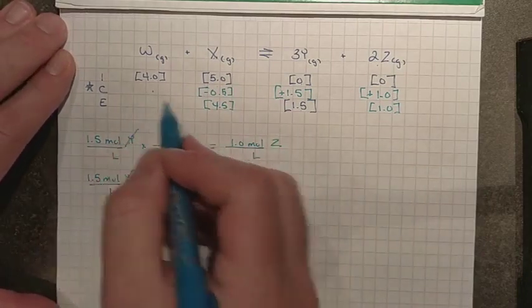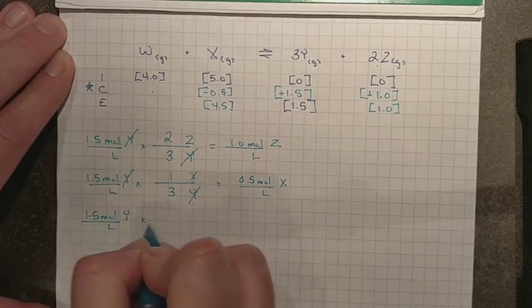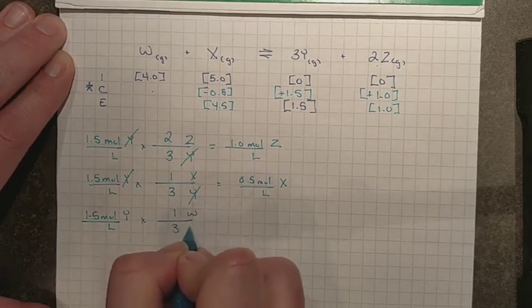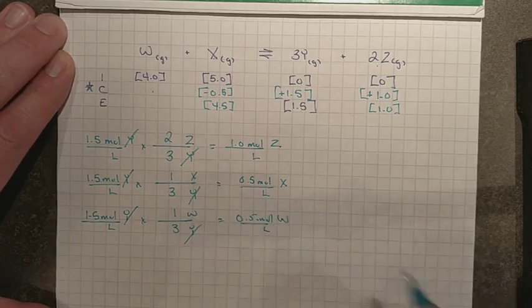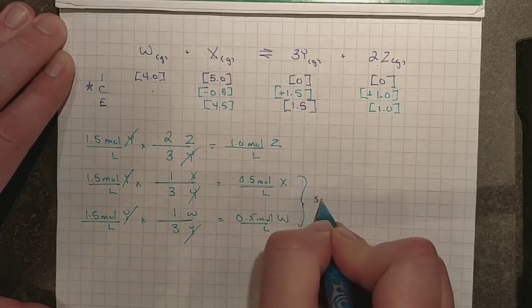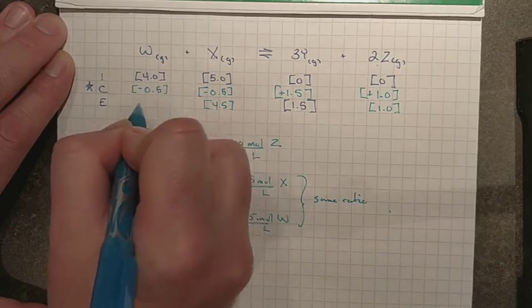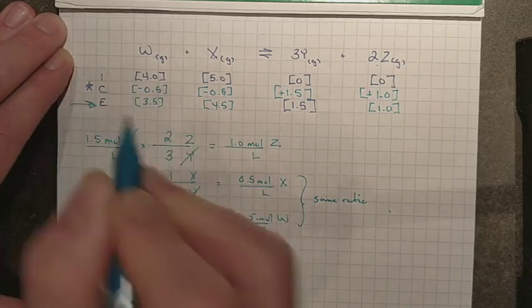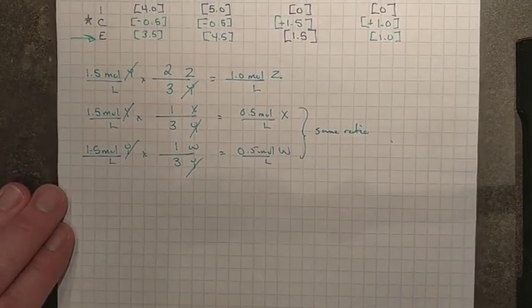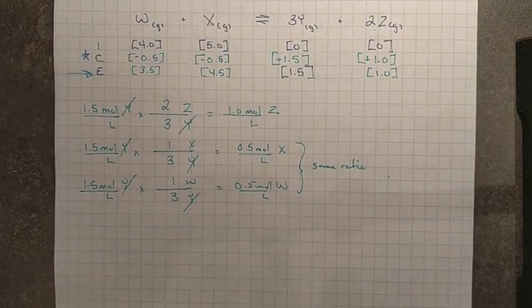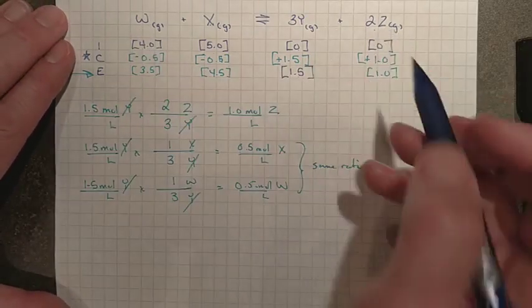But X started at 5. Its change, then, should be a minus 0.5 to leave us with 4.5 at equilibrium. We didn't use very much of it. And then finally, you can see that same 1 to 3 ratio. I'll do it anyway because stoichiometry doesn't take long, and you have 1 part W for every 3 parts Y to get to that same 0.5 mole per liter change in substance W. This is all because these two have the same ratio. And so, this is a decrease of 0.5 to give us 3.5 in the end. Now, I can do my Kc expression.